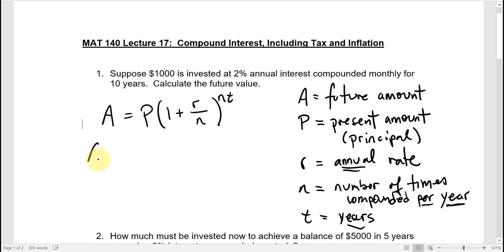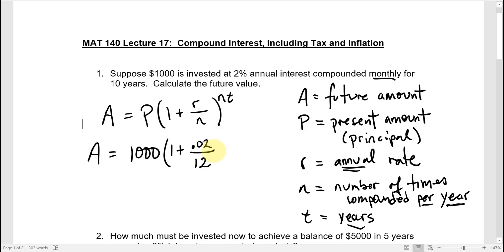In this first example, we have an initial $1,000 principal. It's going to grow by 2% a year, compounded monthly, so we take the 2% annual rate and divide it into 12 equal parts, getting monthly increases. N is the frequency — 12 times — for a total of 10 years. For the most accurate answer, type all of that into the calculator at once.